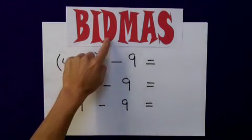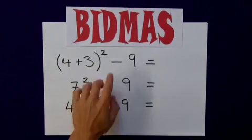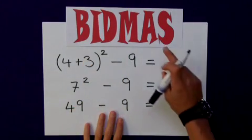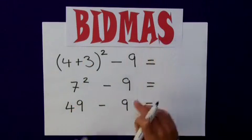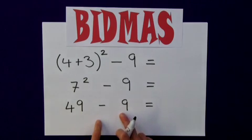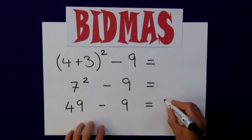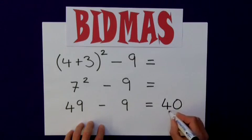The next thing I consider is division. Well, I don't have any division. So, I then move on to M, multiplication. Again, not in this question. The same with the A for addition. Not in this question. So, my final thing that I need to do is my subtraction. 49 minus 9 gives me my final answer of 40.